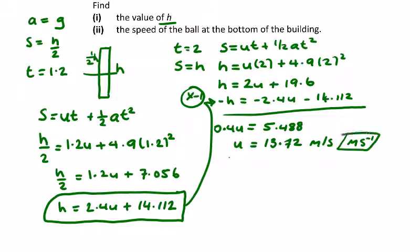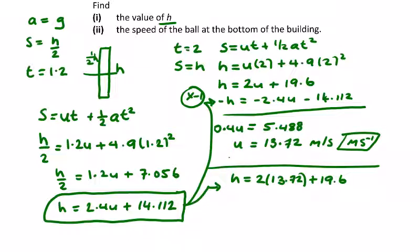So we have u, and we're looking for h. So h from here again, h equals 2u plus 19.6. So 2 times 13.72 plus 19.6, so that's 27.44 plus 19.6, which equals 47.04 meters for the height of the building.